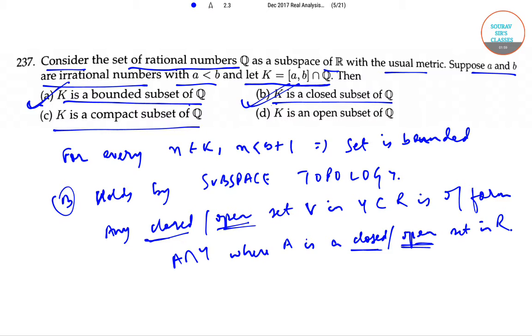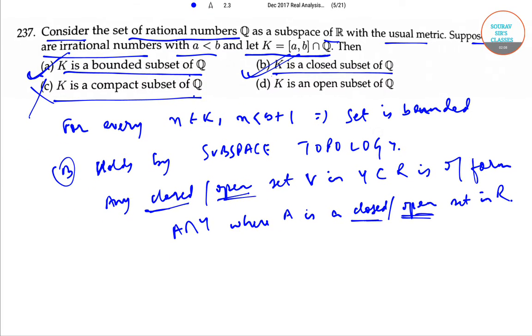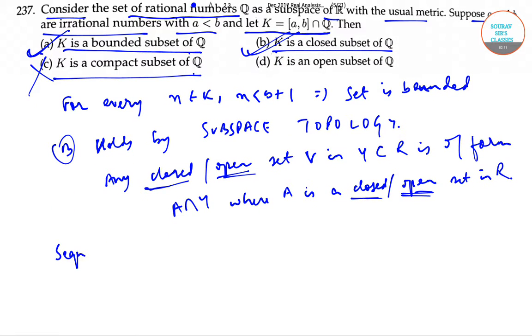Option c: K is a compact subset of Q. This is incorrect. The sequence b minus 1 by n intersection Q, where n is adjusted according to a so that the sequence remains in K, is in K having limit b which is not in K. So c is incorrect.